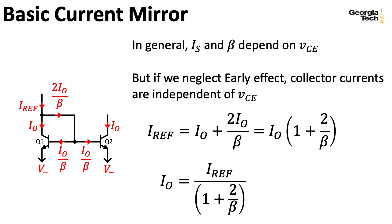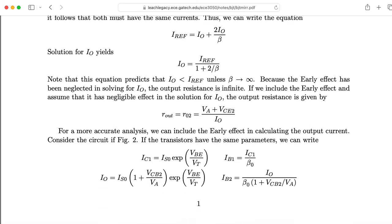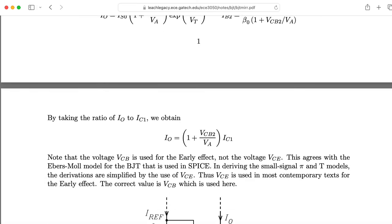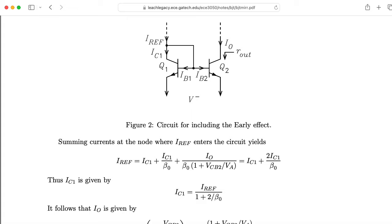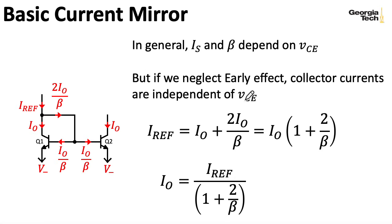In a previous lecture on current mirrors, we looked at this basic two-transistor mirror. Like in our previous lecture, we're going to neglect the early effect when computing the output here, but you can throw in the early effect if you want to, and Marshall explains how to do that in his online notes. In the simplified analysis, if beta is sufficiently large, the output current will very closely match the reference current. We use a Widlar current mirror when we would like the output current to actually be less than the reference current.